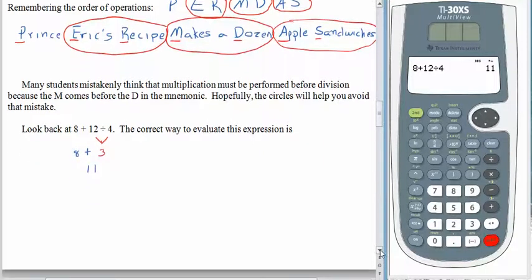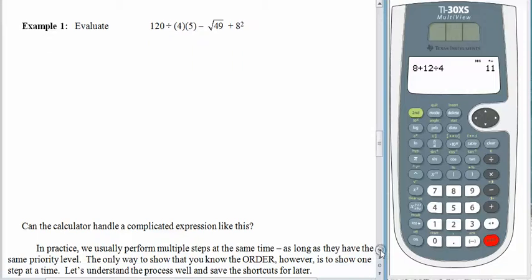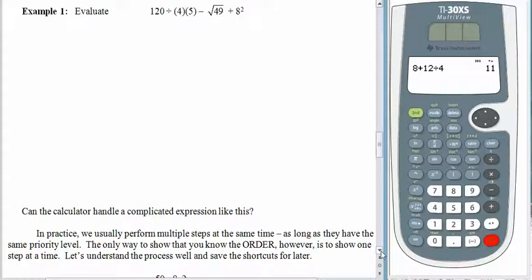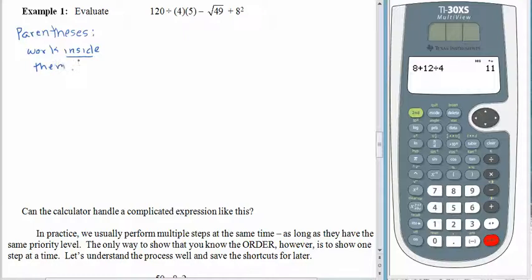Let's check out something a little more complicated. This expression is kind of long: 120 divided by 4 times 5, minus the square root of 49, plus 8 squared. Going through our order of operations, the first thing we do is look for parentheses. We see them, but the parentheses aren't holding anything together — they're just here to indicate multiplication. When we talk about parentheses with the order of operations, we're looking for parentheses used as grouping symbols. The job is to work inside them. If there's nothing to do inside, then we're done.